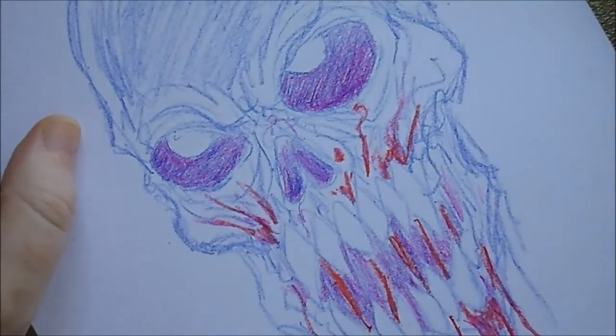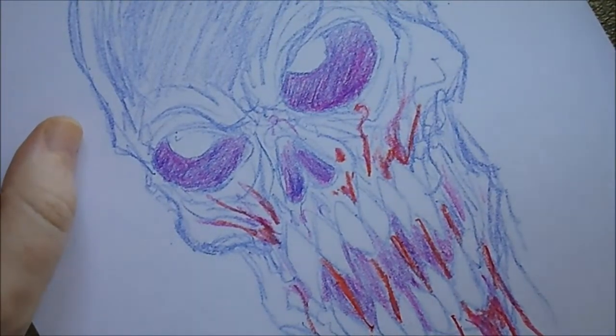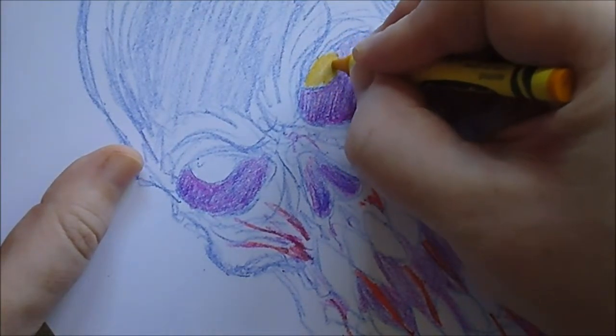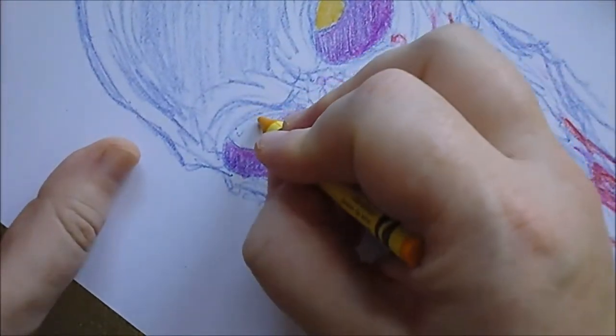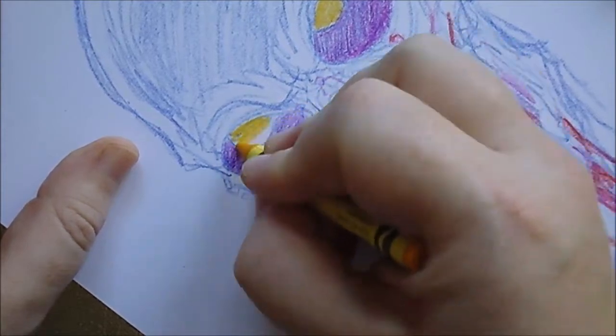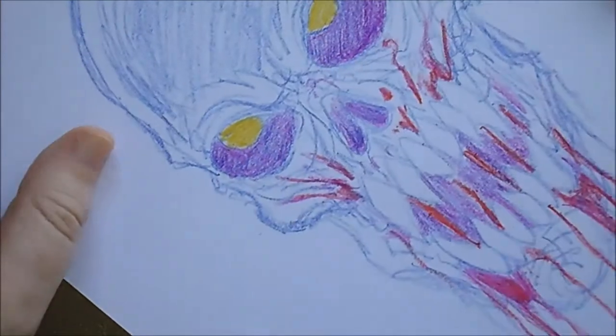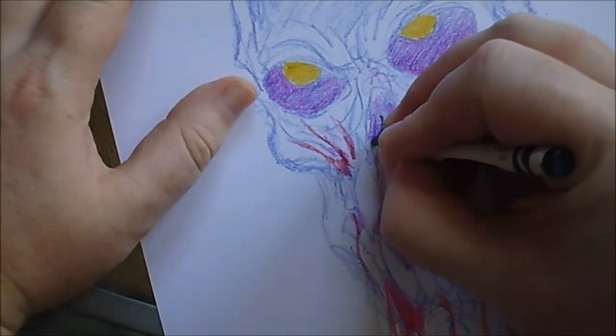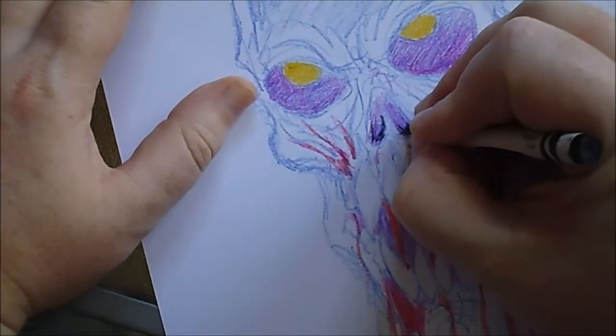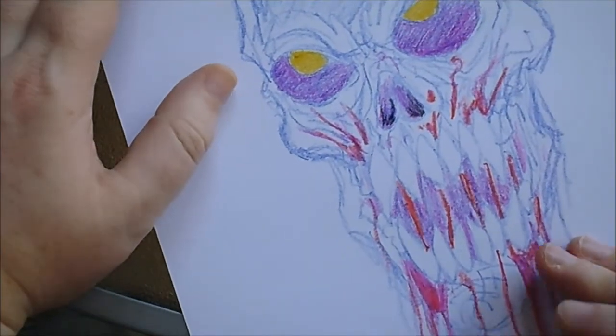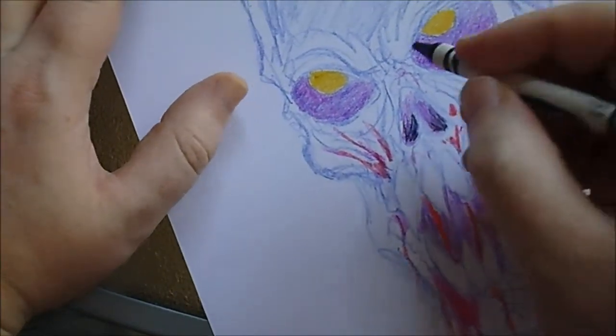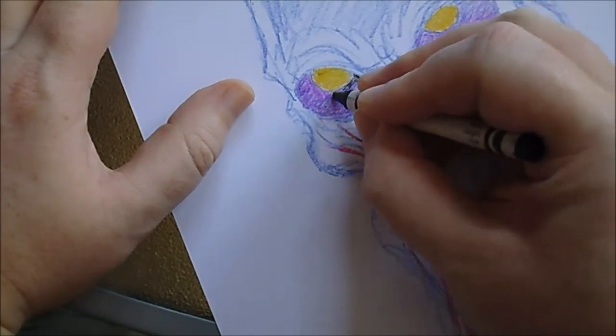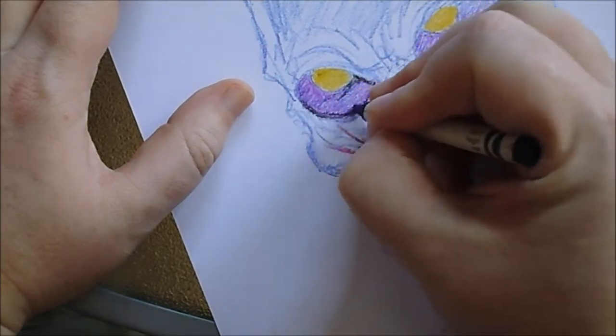And all these splatters as well. I think I'll do a yellow just there. So I've got a black crayon and just add a bit of darkness to the bottom of there, and maybe under the eyes a slight bit of shadow.